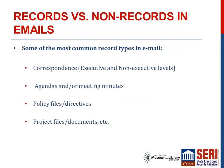The majority of emails will be considered correspondence. For our purposes in South Carolina, correspondence is covered under one of two general retention schedules and is either executive level or non-executive level. Non-executive level correspondence only has to be kept as long as it is being referred to, but executive level correspondence is permanent and has to be transferred to the archive. Some records are better categorized as something else — other common record types in email are agendas, meeting minutes, policy files and directives, and documents relating to specific projects, some of which are covered by different retention periods.